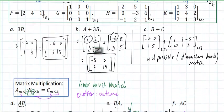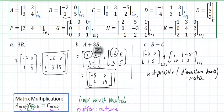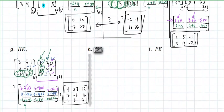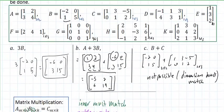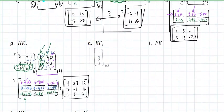And if I take EF, E happens to be 1, 3, 2, so this is 3 by 1, and F, F is 2, 4, 1. This is 1 by 3, so the inners match, and the outcome is a 3 by 3. Look at that, that small nice thing is going to give this big thing, that happens.